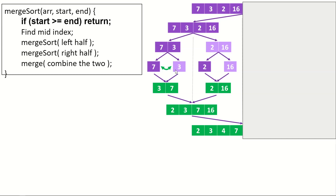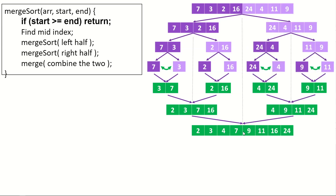When we merge 7 and 3, they end up in order. 2 and 6 get merged in order. Then those two merged lists get merged in order, and finally that list merges with the right half to produce a fully sorted result. That's the full picture of what merge sort is doing — splitting until you get individual numbers, then merging pairs back together.